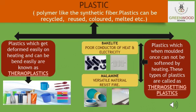There is a type of plastic which, when heated, is easily deformed and can be bent or changed into any shape. This type of plastic is known as thermoplastic. Thermoplastics are very flexible, can be easily molded and deformed into any shape or size. Examples of thermoplastics include polythene bags and plastic bottles.